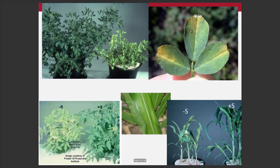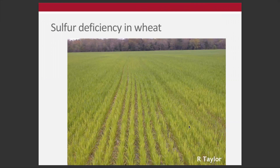Here are some other examples: sulfur deficiency in alfalfa, showing generalized chlorosis particularly on the leaf tip and along the midrib. Sulfur deficiency in tomatoes. There's also the classic striping we get in corn, and a general lack of vigor. Wheat and alfalfa grow during periods when soils are cooler, and because the mineralization potential of those cold soils is lower, we can often see sulfur deficiency there.